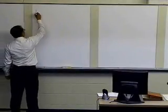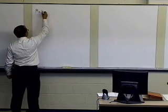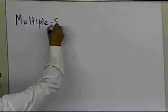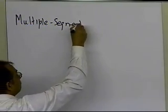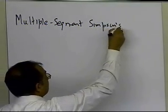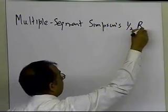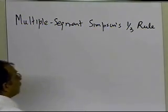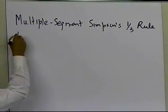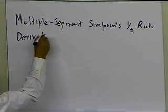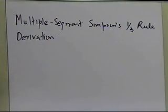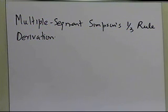In this segment, we're going to derive the multiple segment Simpson's one-third rule. In the previous segment, I showed you the motivation for developing the multiple segment Simpson's one-third rule, but in order to be able to algorithmically apply Simpson's one-third rule, we do need to derive a formula for it, so that we can program it as a function or subroutine if we want to integrate functions using Simpson's one-third rule.